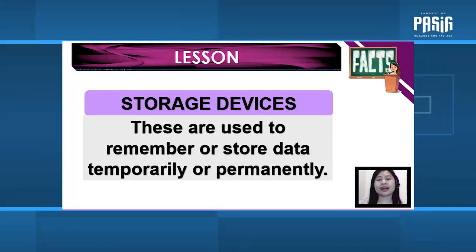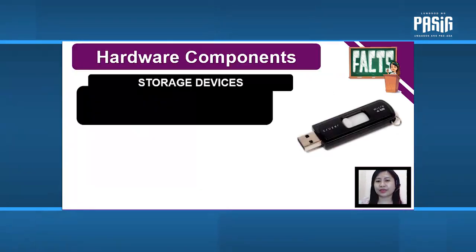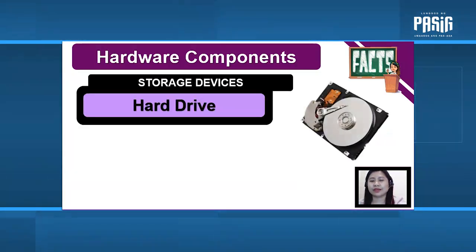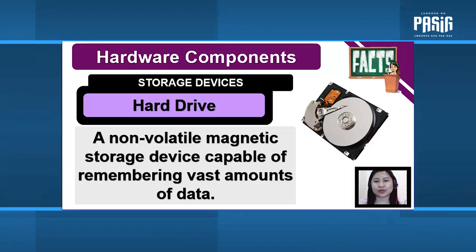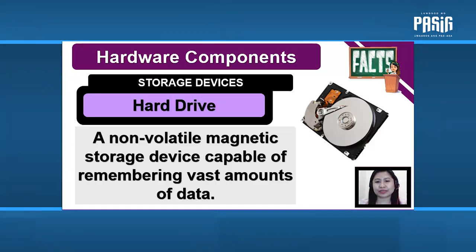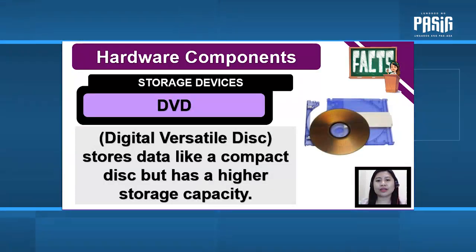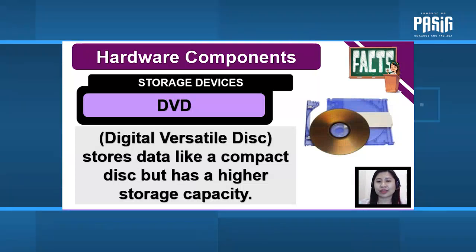Storage devices are used to remember or store data temporarily or permanently. To begin with, the flash drive: a non-volatile solid-state storage device used to store data. Hard drive: a non-volatile magnetic storage device capable of remembering vast amounts of data; it is used inside the system unit. Compact disk or CD: an optical storage device that stores binary data to the texture of the disk surface. Looks the same as a DVD, or digital versatile disk, which stores data like a compact disk but has a higher storage capacity.